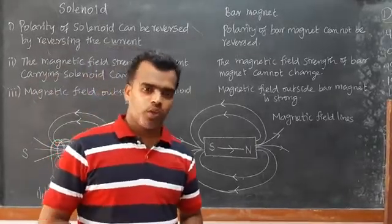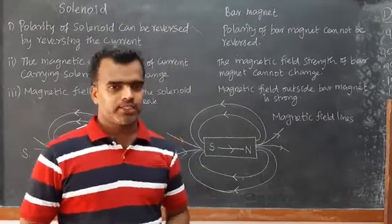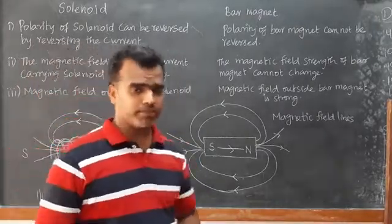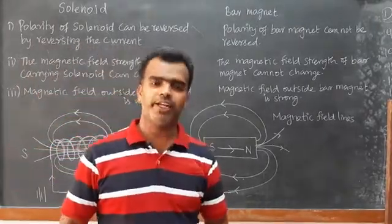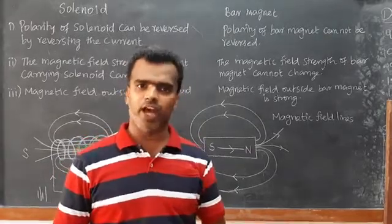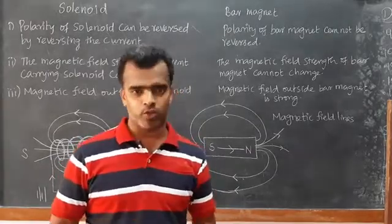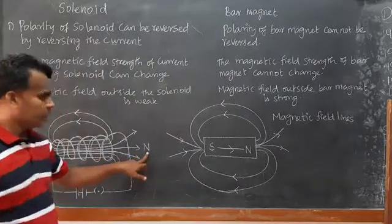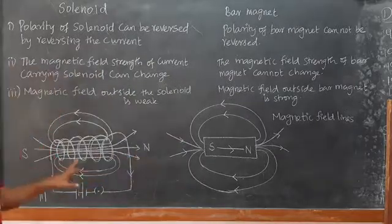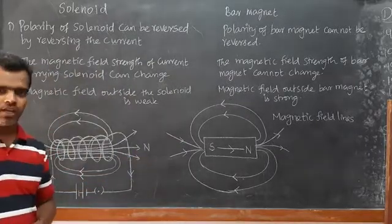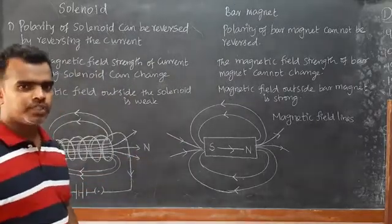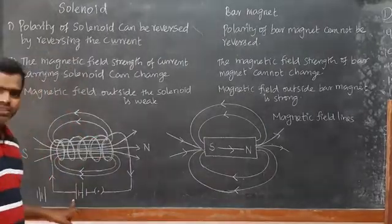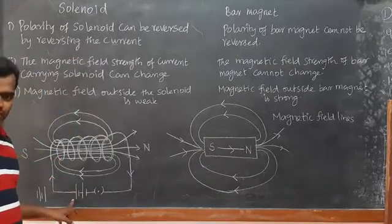The solenoid can change its polarity — the north pole and the south pole. The polarity of the solenoid can be changed. How do we change the polarity? We change the current direction.